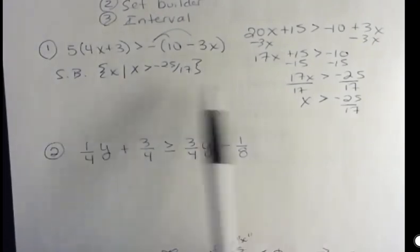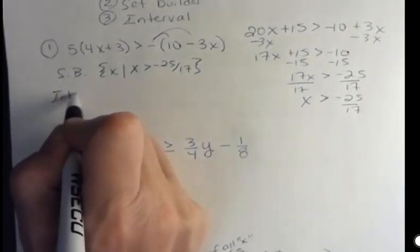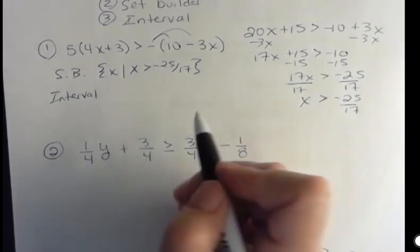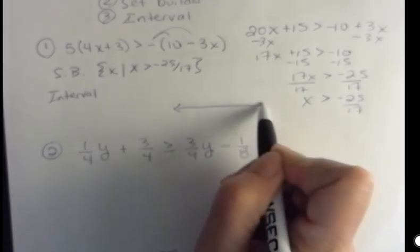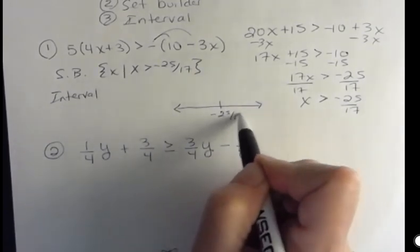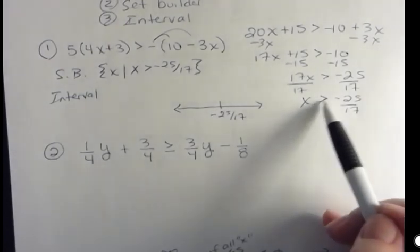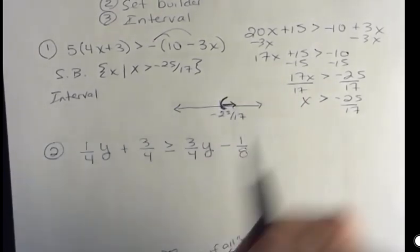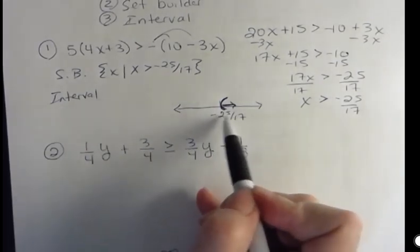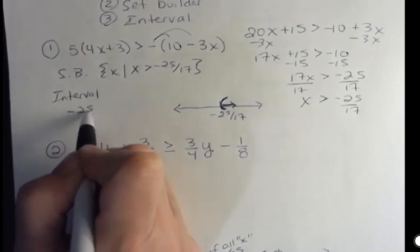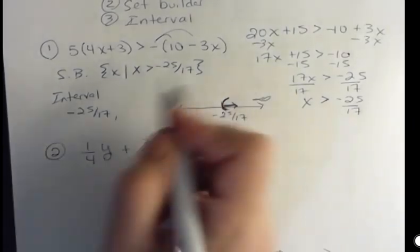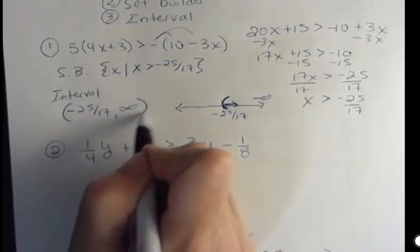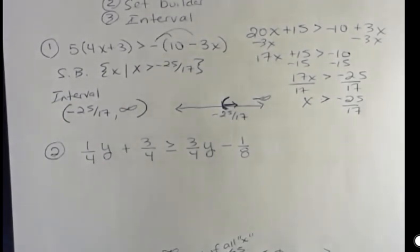Sometimes they ask for an inequality, sometimes for set builder notation, and sometimes for interval notation — you have to know which is which. Sometimes it's easier to graph it first. I'm going to graph it using either parentheses or a bracket. My number is negative 25 seventeenths. I'm headed to the right because it's greater than. I don't have an equal-to part, so I have a parentheses opening to the right and going that way forever. My interval then: on the very furthest left I have negative 25 over 17, and on the furthest right I'm heading to infinity. No equal-to part, so it's rounded, and infinity is always rounded — all infinities always have the parentheses.